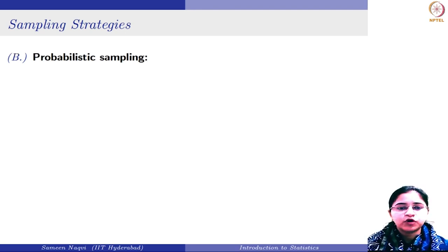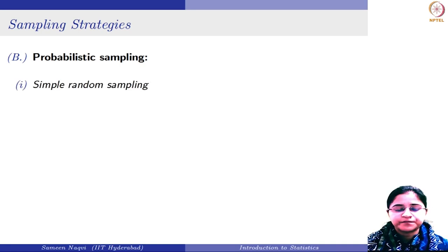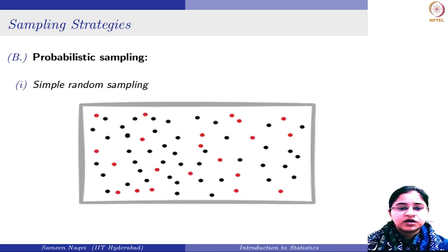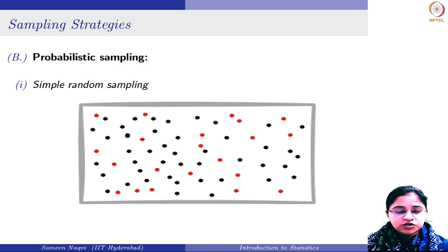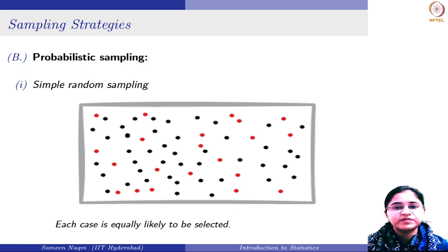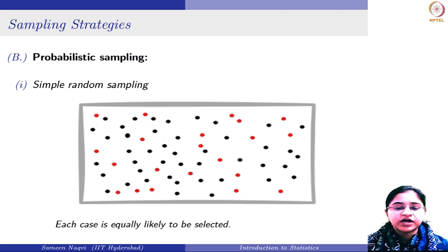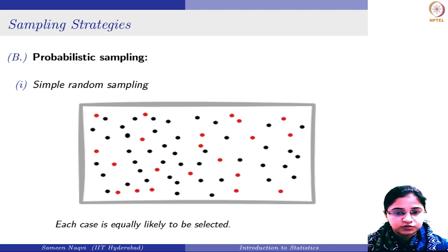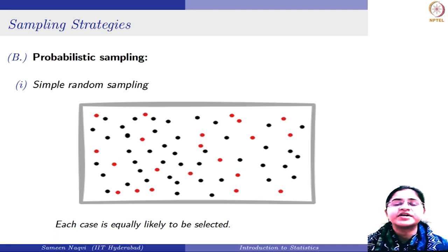On the other hand, in probabilistic sampling, the first and most common technique is simple random sampling. In simple random sampling, each case is equally likely to be selected — each observation has an equal chance of being chosen. For instance, if you want to make a committee of five students from a class, you can just randomly pick any five students without being biased toward any particular student. So each student has an equal chance of getting selected.